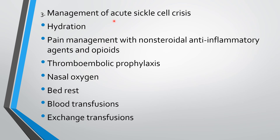The third important management is management of acute sickle cell crisis. If any of the four crises occurs, it must be managed with hydration — since dehydration aggravates crisis — and pain management with NSAIDs and opioids. Thromboembolic prophylaxis is important due to vaso-occlusion. Nasal oxygen and bed rest are essential. Blood transfusion and exchange transfusion are also performed to remove sickle RBCs from the body.